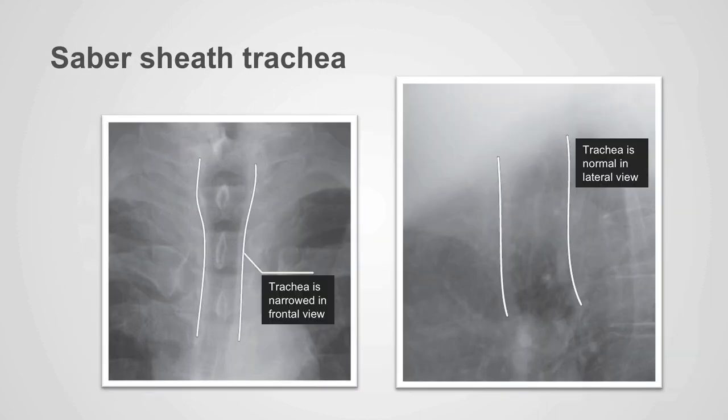Often, with aging or with chronic obstructive pulmonary disease, the lateral dimensions of the trachea can decrease with an increase in the anterior-posterior dimension. The analogy to this is pinching a tube between your thumb and index finger, which would cause narrowing in one dimension and expansion in the other. This appearance of the trachea is called a saber sheath trachea and should not be mistaken for tracheal stenosis.